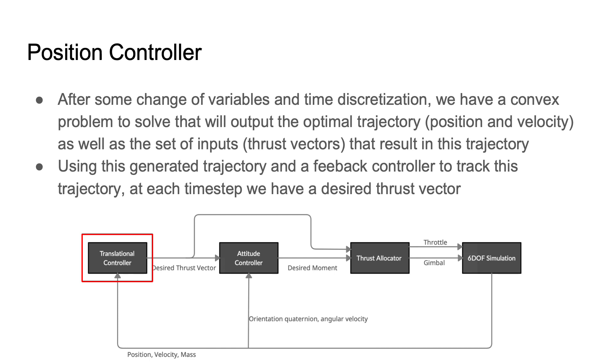After some change of variables and temporal discretization, this problem can be fed into an interior point solver and will output the optimal trajectory of positions and velocities over time. Using this generated trajectory as well as a feedback controller to help track this trajectory, we get a desired thrust vector that the engine should produce in order to help us track this fuel optimal trajectory.